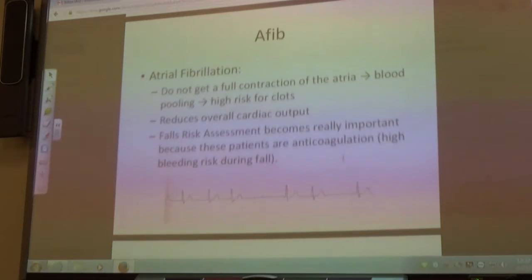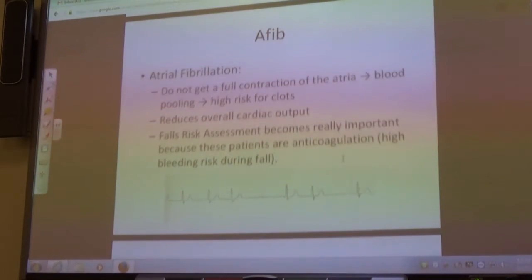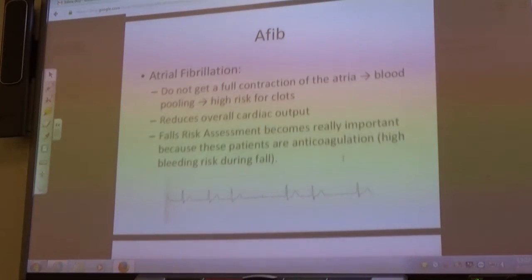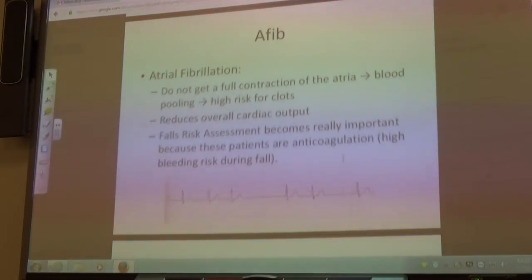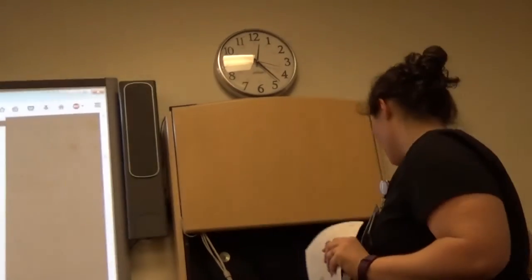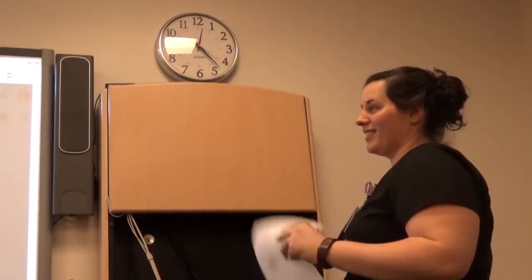AFib — a lot of people have it, and she spent the most time on it. With AFib you're not getting a full contraction of the atria, so blood is pooling and you're at high risk for clot. A lot of our stroke patients have a history of AFib. Because you're not getting a full atrial contraction, it directly affects your cardiac output — you're not getting good blood flow to the rest of your body. Many of these patients are on some sort of anticoagulant. She really emphasized that a falls risk assessment is huge, because if their fall risk is high and they're on anticoagulation, they have a high chance of hitting their head and getting a bleed.